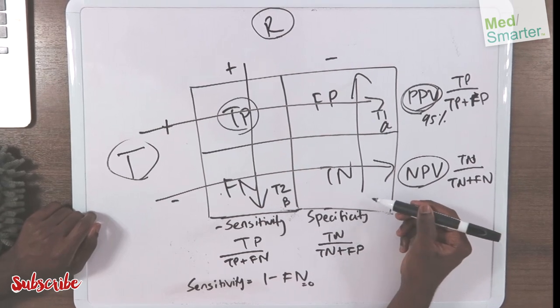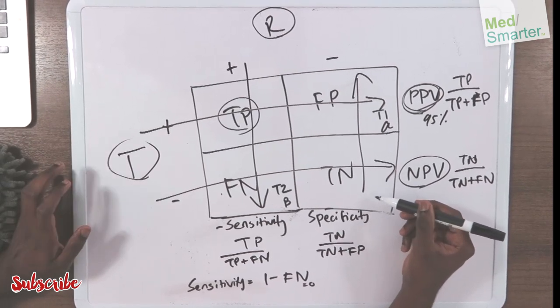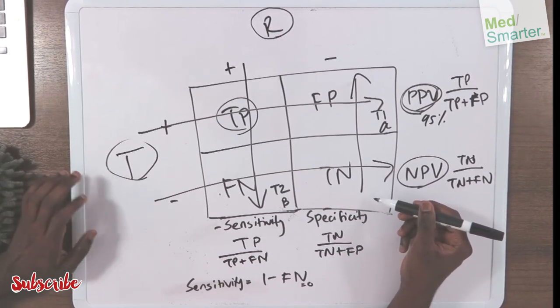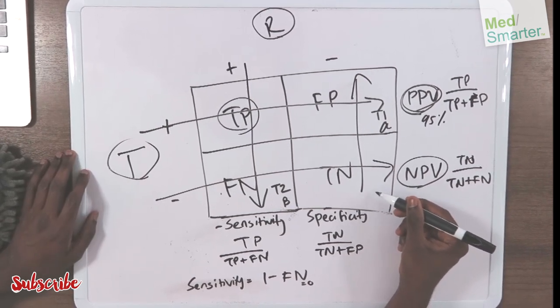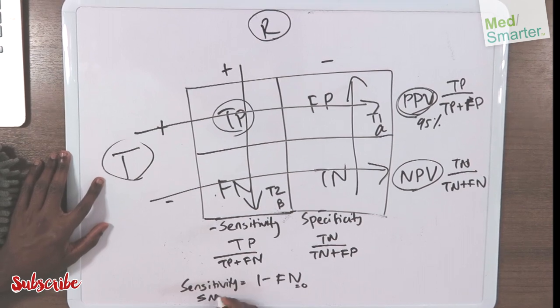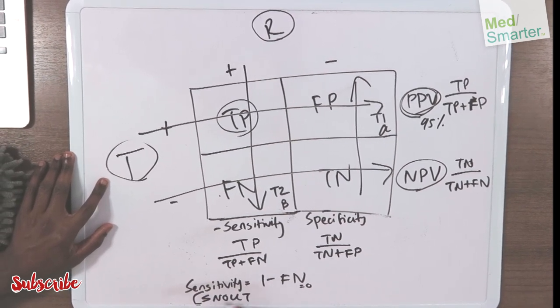If your true negative is 100%, you're confident that nobody has it. Therefore you can rule it out. And that is why in First Aid you see it as SNOUT.